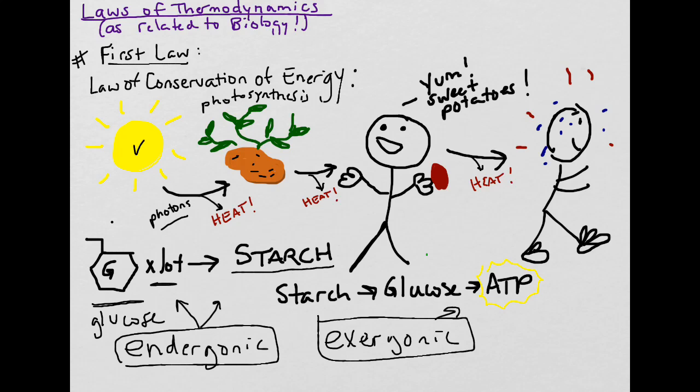So that's exergonic, because energy is released and a product has been broke down. A reactant has been broke down. Okay. So now this guy has a bunch of ATP, so he's ready to go do work. So you can see I have him running, he has his little tennis shoes on here, and he's sweating. Okay. So he's using the ATP and breaking it down.